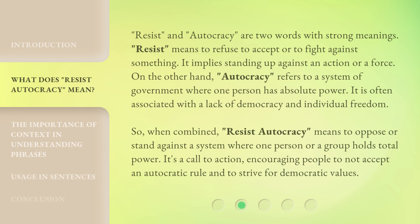Resist and autocracy are two words with strong meanings. Resist means to refuse to accept or to fight against something — it implies standing up against an action or a force. On the other hand, autocracy refers to a system of government where one person has absolute power, often associated with a lack of democracy and individual freedom. So when combined, resist autocracy means to oppose or stand against a system where one person or a group holds total power. It's a call to action, encouraging people to not accept autocratic rule and to strive for democratic values.